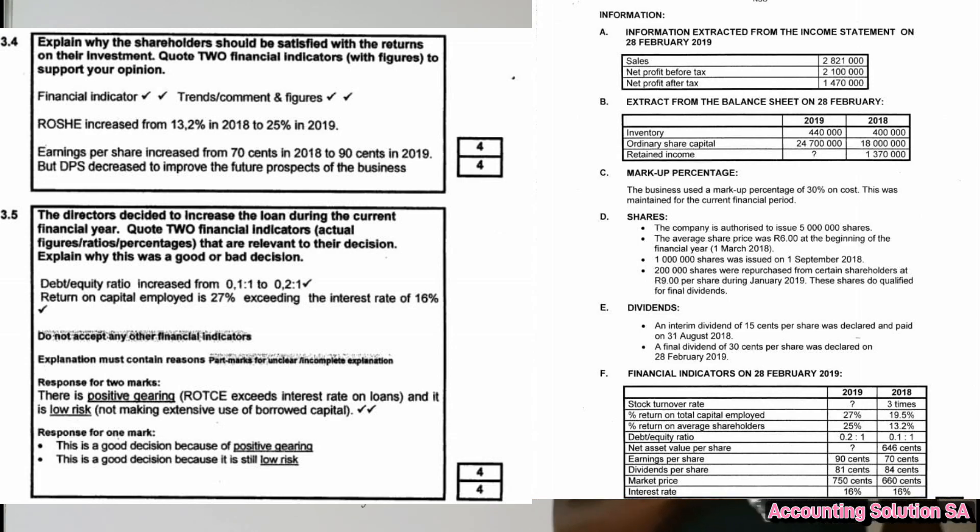Then in number 3.5, directors decided to increase the loan during the current financial year. Quote two financial indicators. Two indicators that the director decided to increase the loan: number one, you can check debt equity ratio guys, it has increased which means that liability has increased. And the return on capital employed, it has increased. It was from 20, let me open this part, it was 19.5% and now it is increased to 27%. On the memorandum the quoted return on capital employed is 27 percent and exceeding interest rate, the interest rate it was 16 percent.